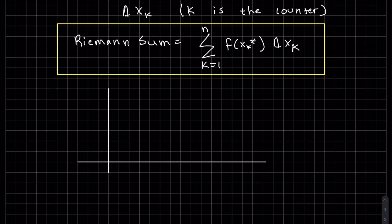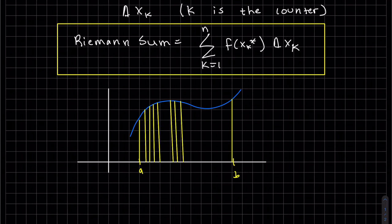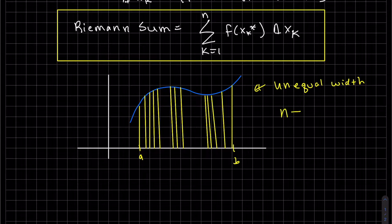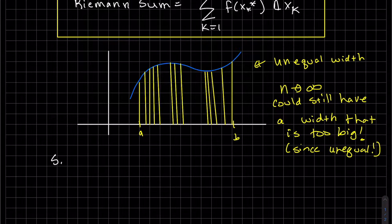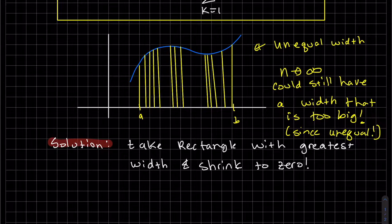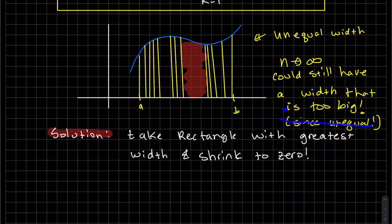I'm going to draw a picture of what could happen. You can see here that our partitions can be unequal width. If we take n approaches infinity, the problem is we still could have a width that's too big since they're unequal. So I have a solution for that.